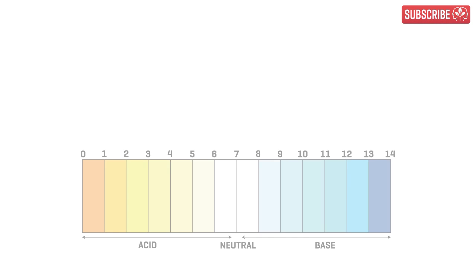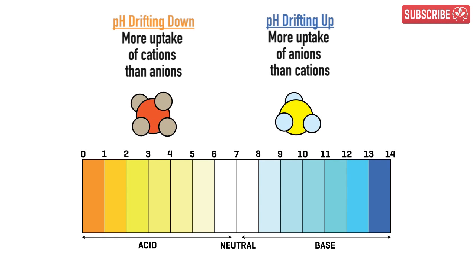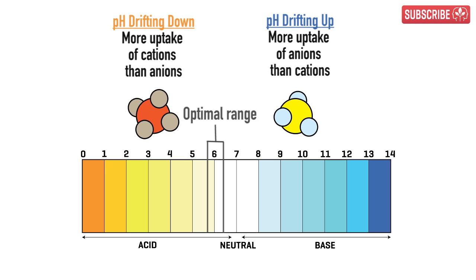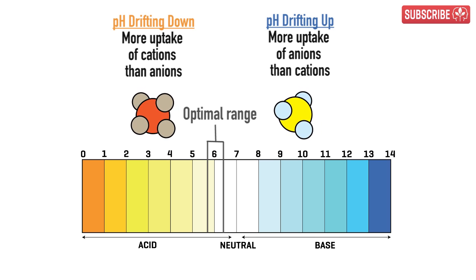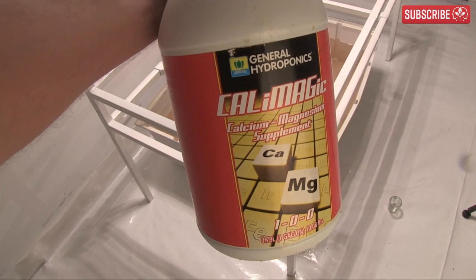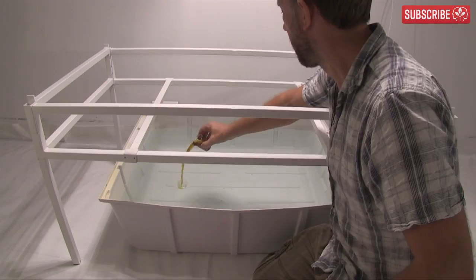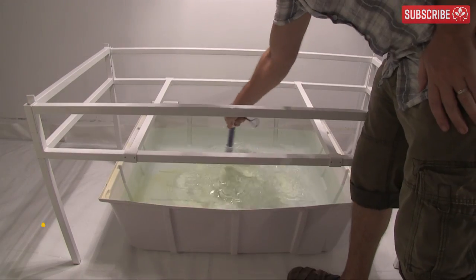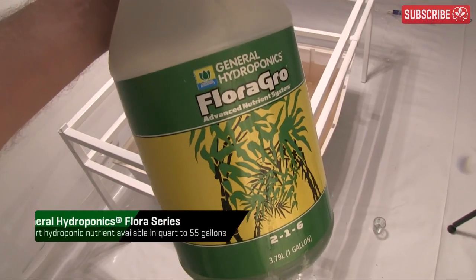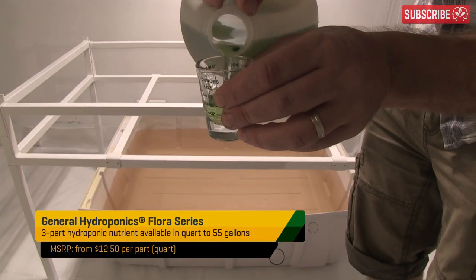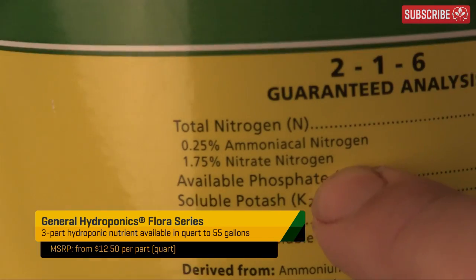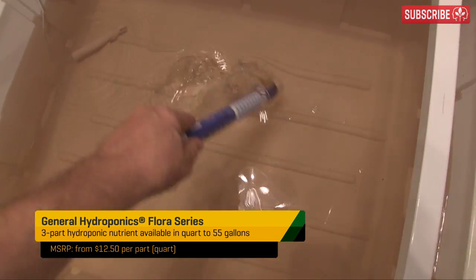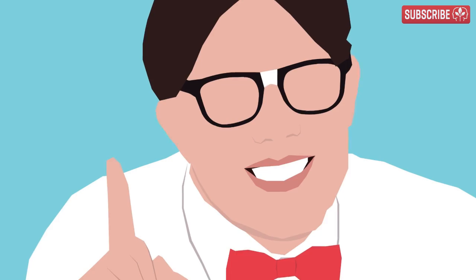The opposite occurs when your plants take up cations — the plant releases hydronium ions or H+ into the nutrient solution, increasing acidity. So when the uptake of anions exceeds the uptake of cations, your pH rises. Incidentally, manufacturers of premium hydroponic nutrients provide nitrogen in multiple forms — both anion and cation — which in turn helps regulate the pH of the nutrient solution.